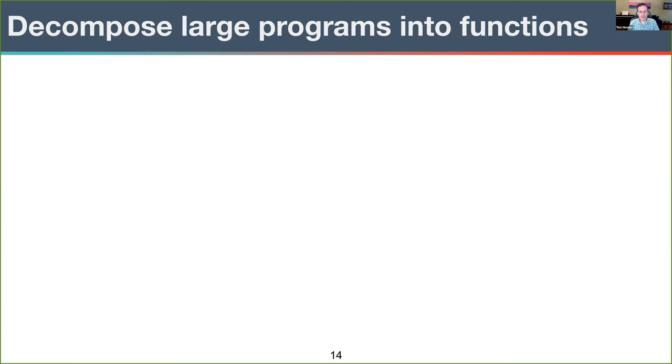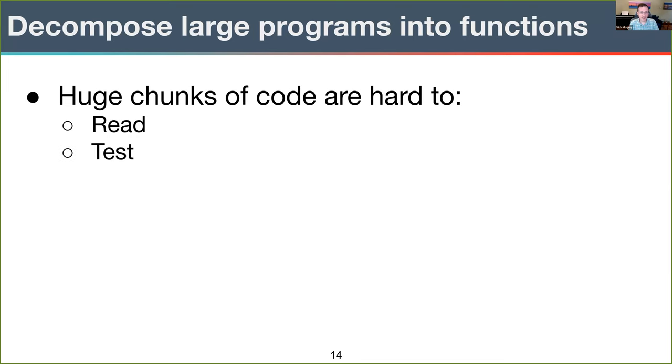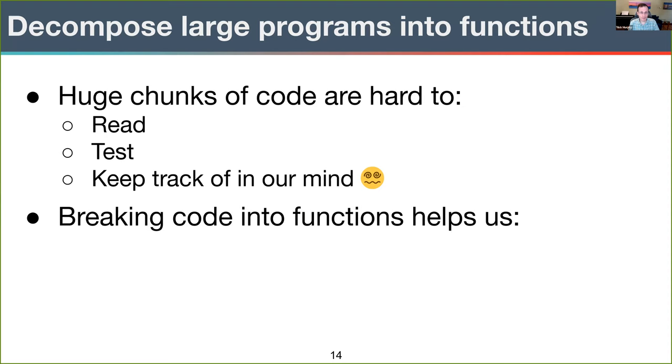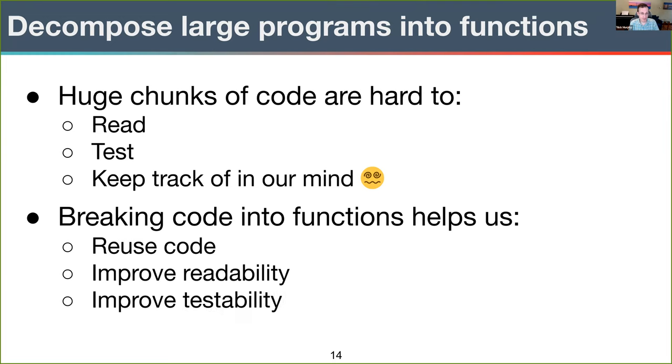A recurring software development strategy is to break down big, complicated stuff into smaller, more manageable, and more reusable parts. The key strategy for doing this in scientific software development is to decompose large programs into functions. And huge chunks of code, sections of code that are dozens or maybe hundreds of lines of code long, are harder to read, to test, and even to keep track of in our minds. Breaking up large sections of code into separate functions helps us to reuse code and improve the overall readability by separating high-level code from low-level details, make the code easier to test, and consequently, because of all this, make it easier to isolate and fix bugs.